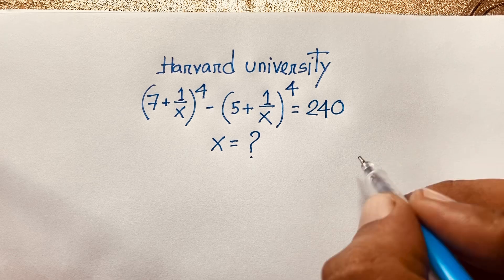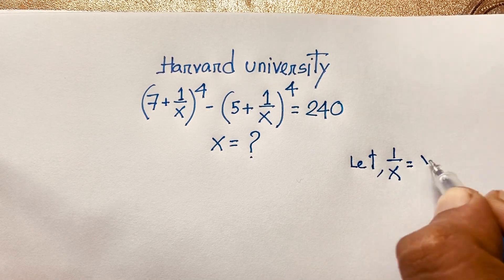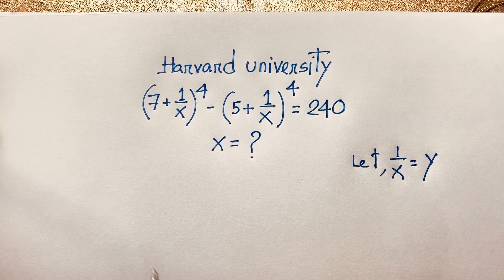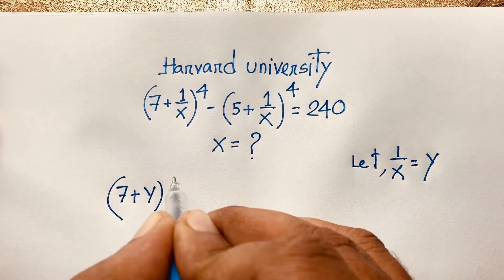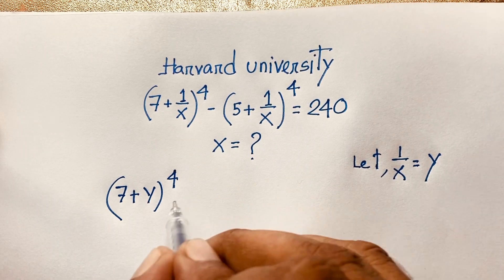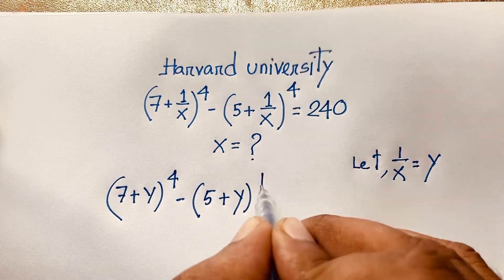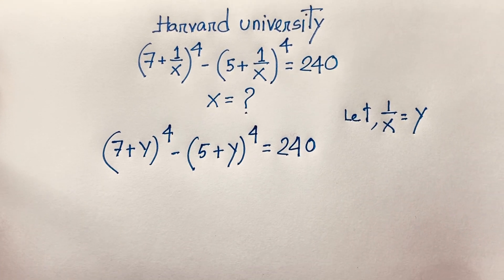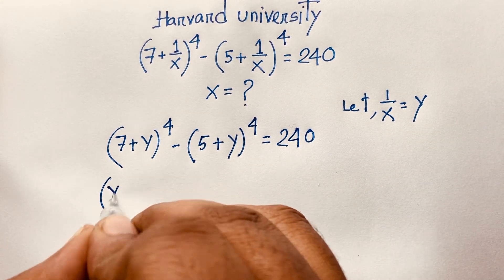Let 1/x equal y. Now you can see that in this expression it will be (7 + y) to the power 4 minus (5 + y) to the power 4 is equal to 240.